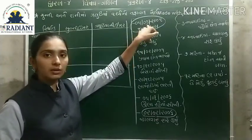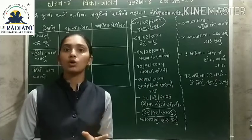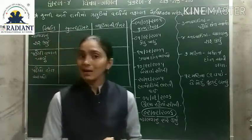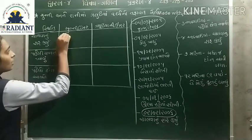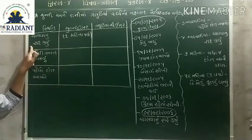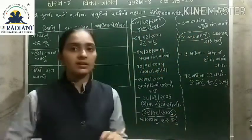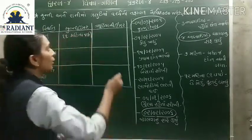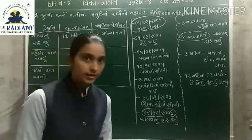2005 ના ત્રીજા મહીના ઠી ગણ્ઠ - ગણ્ઠ - ગ - ગ - ગ - ગ - ગ - ગ - ગ - ગ - ગ - ગ - ગ - ગ - ગ - ગ - ગ - ગ - ગ - ગ - ગ - ગ - ગ - ગ - ગ. ઠ - ઠ - ઠ - ઠ - ઠ - ઠ - ઠ - ઠ - ઠ - ઠ. 2 - 2 - 2 - 2 - 2 - 2. 11 (અગ્‍ - અ - અ - અ - 11). 11 - 11 - 11 - 11 - 11 - 11. ઠ - ઠ - ઠ - ઠ. 11 - 11 - 11 - 11 - 11. ઠ - ઠ - ઠ - ઠ. ઠ - ઠ. ઠ - ઠ - ઠ - ઠ. 4 - 4 - 4 - 4. ઠ - ઠ - ઠ. ઠ - ઠ - ઠ - ઠ - ઠ. ઠ - ઠ - ઠ - ઠ. ઠ - ઠ - ઠ.